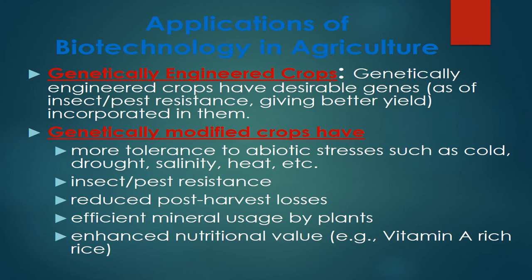Genetically engineered crops have desirable genes incorporated in them. Genetically modified crops have more tolerance to abiotic stress such as cold, drought, salinity, and heat. They help in producing insect and pest resistance, and help in reducing post-harvest loss. They also improve the efficiency of mineral usage by plants.